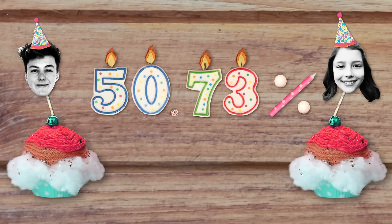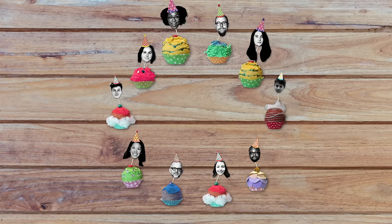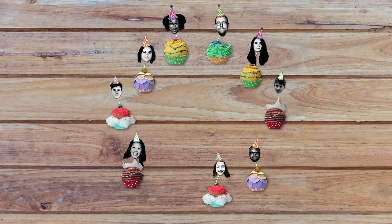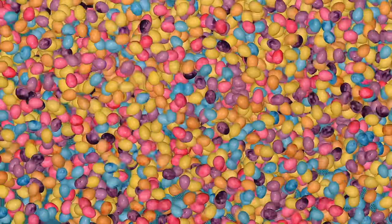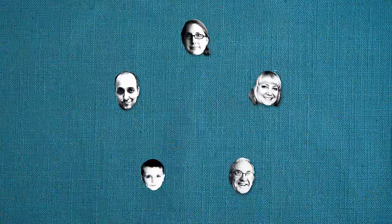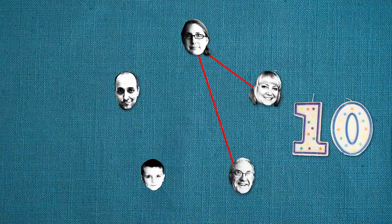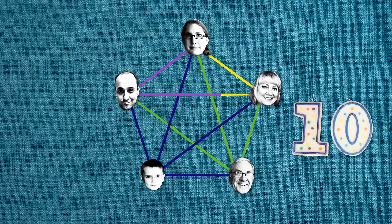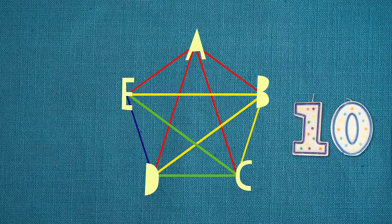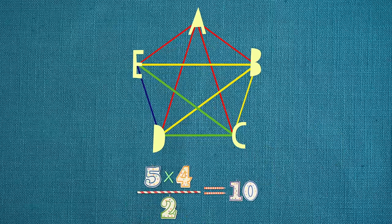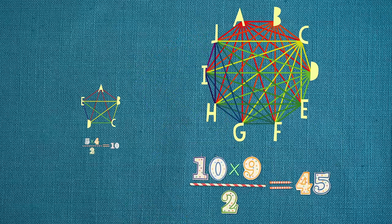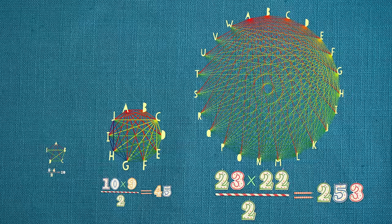The key to such a high probability of a match in a relatively small group is the surprisingly large number of possible pairs. As a group grows, the number of possible combinations gets bigger much faster. A group of five people has ten possible pairs. Each of the five people can be paired with any of the other four. Half of those combinations are redundant, because pairing person A with person B is the same as pairing B with A, so we divide by two. By the same reasoning, a group of ten people has 45 pairs, and a group of 23 has 253.